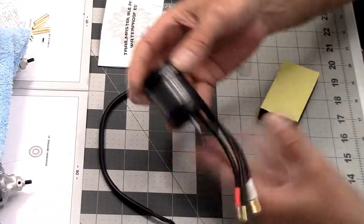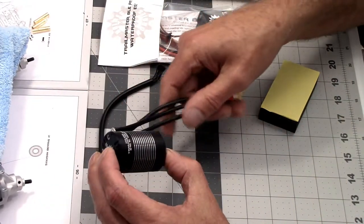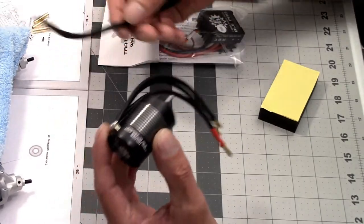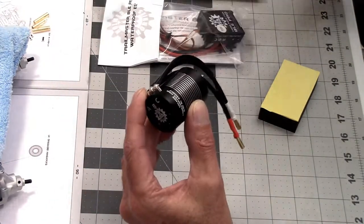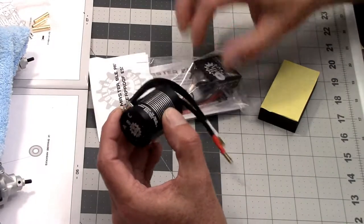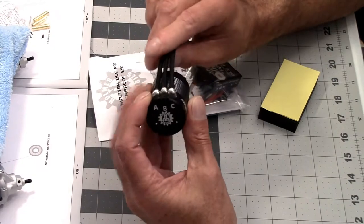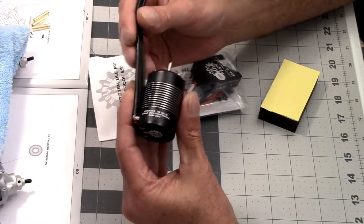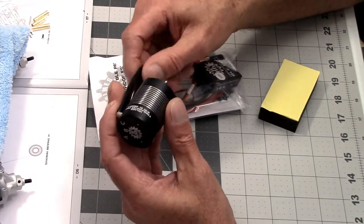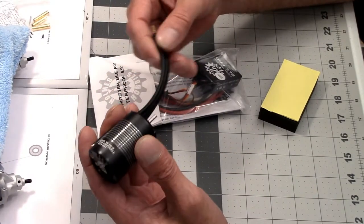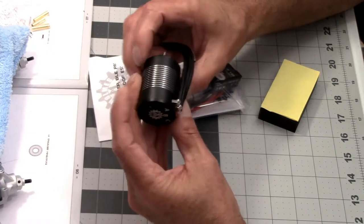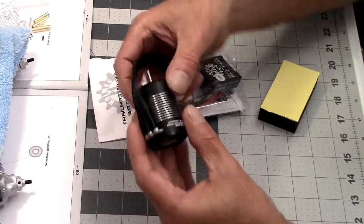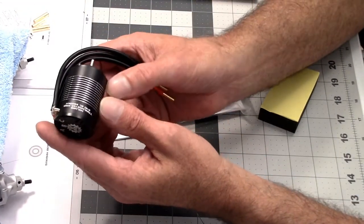And the Holmes Hobbies Trailmaster Pro 540 BL 3300 KV sensored brushless motor. Of course, your sensor wire. I've never used a brushless system in a crawler or trail truck before. Figured I'd give it a try, heard a lot of good things about them. These Trailmaster Pros are supposed to have very good low-end control. We'll see. Very nice looking motor, full ball bearing motor, no bronze bushings like you get with a lot of them.